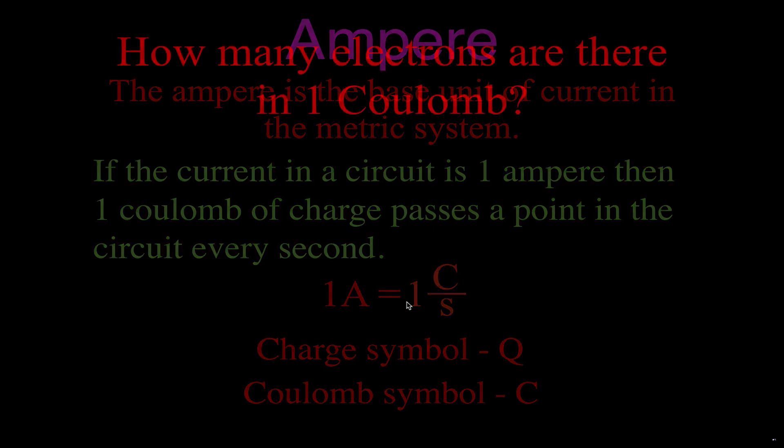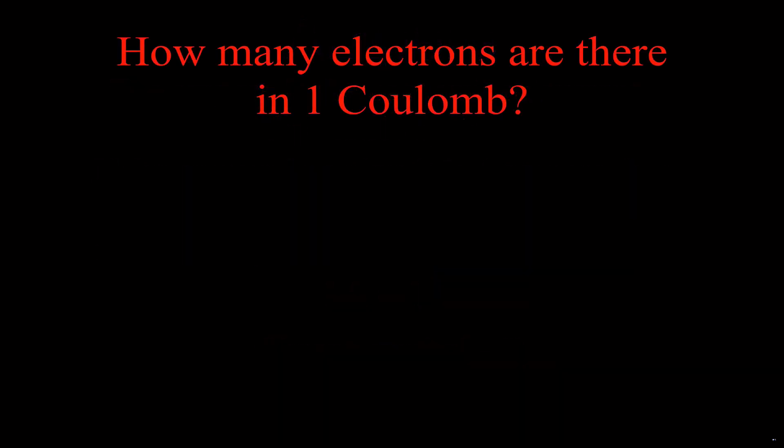We have one coulomb of charge passing a point if we have one ampere, but how many electrons? Because it's really the electrons that are flowing through the circuit. It'd be really interesting to know, well how many electrons is that actually?